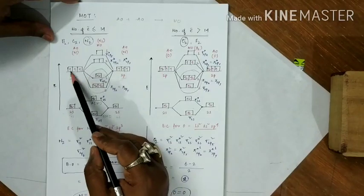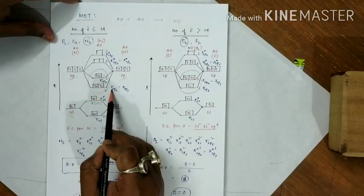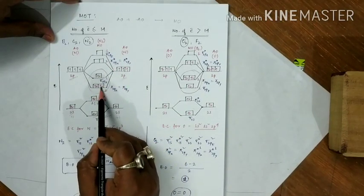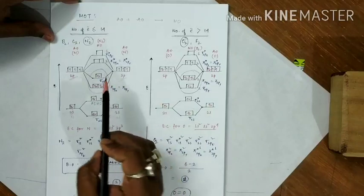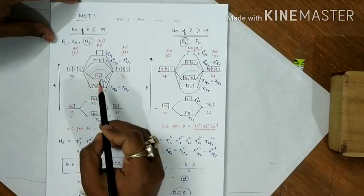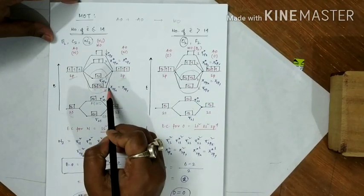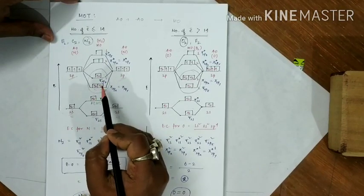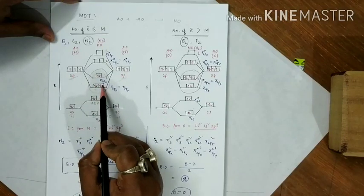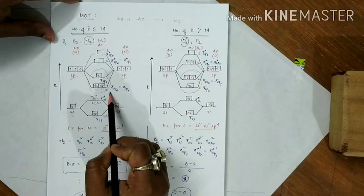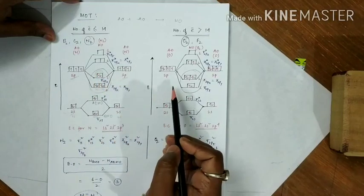For the 2p orbitals in N2, we have 6 electrons total. The π2px and π2py orbitals are degenerate — meaning they have the same energy — so we give 1 electron to each first, then fill the second electron into each. That occupies 4 electrons in π2px and π2py, and the remaining 2 electrons go into the σ2pz orbital.